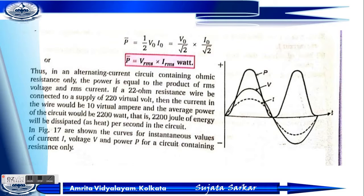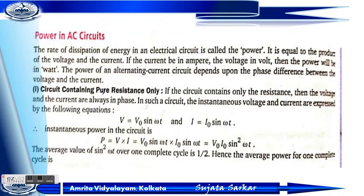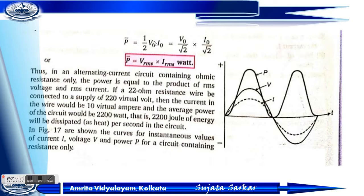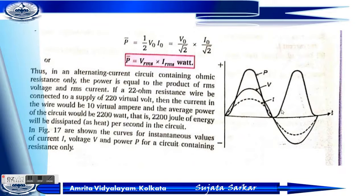The average power over one complete cycle is P equals one half V₀ I₀, which can be written as V₀ by root 2 into I₀ by root 2, since root 2 times root 2 equals 2. So P equals Vrms into Irms. In an AC circuit containing only resistance, power equals the product of the RMS voltage and the RMS current. The graph shows the variation of voltage, current, and power with respect to time t.